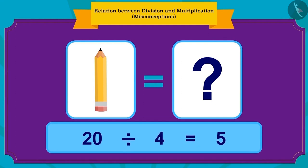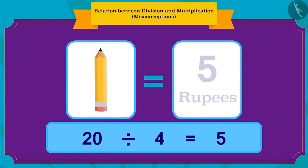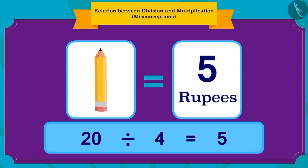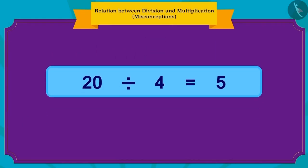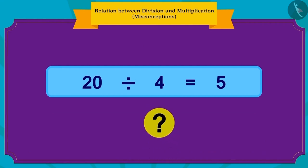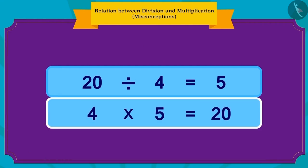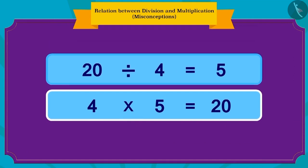Raju and Bablu will need to pay five rupees for one pencil. We can find this answer with division. Children, how can we write this in terms of multiplication?